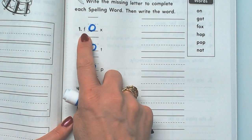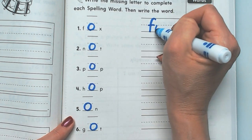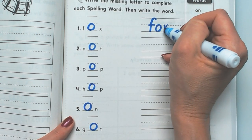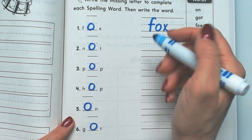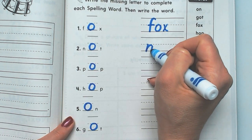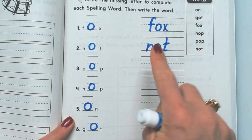Okay, so this one says fox, and we're going to write fox. This one says N-O-T, not. N-O-T, not.